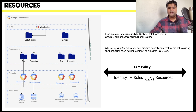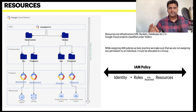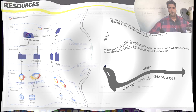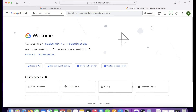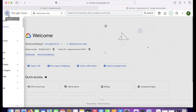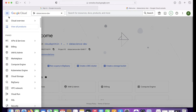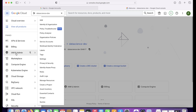In summary: identity plus role, when attached to a resource, is called an IAM policy. Let me now give you a quick walkthrough of IAM in the console before we jump into the use cases.